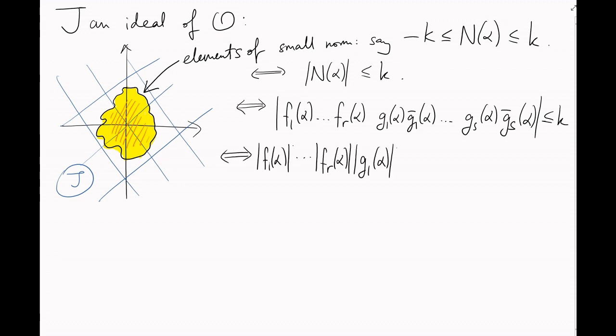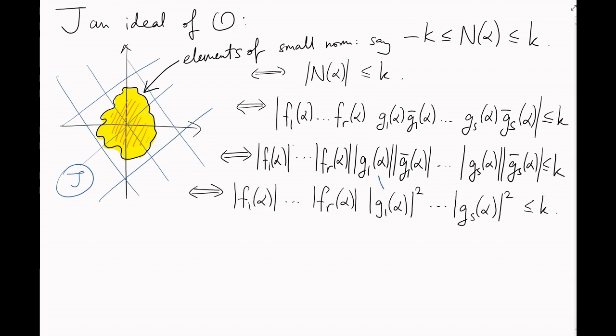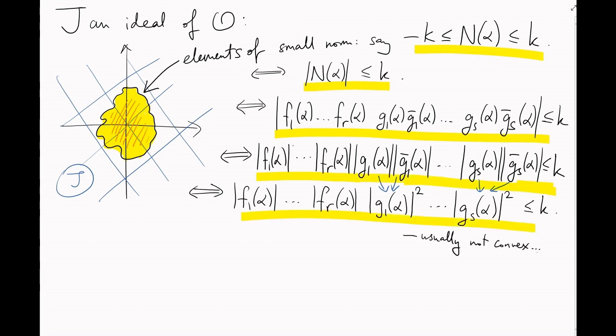Let's apply our formula. The norm is just F1 up to FR times G1 times G1 bar up to Gs times Gs bar. Then I can distribute the absolute value over all the factors. I've also combined the imaginary embeddings with their conjugates, since complex conjugation doesn't change the absolute value.